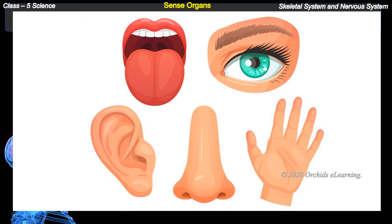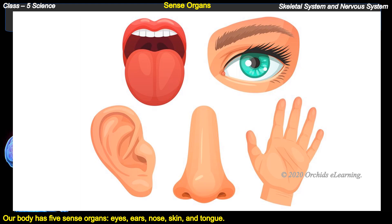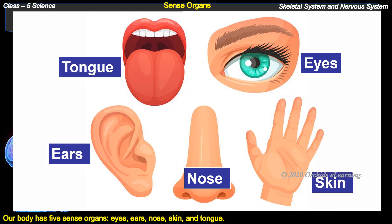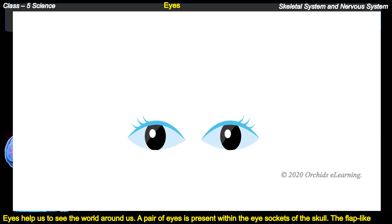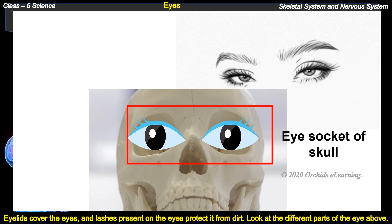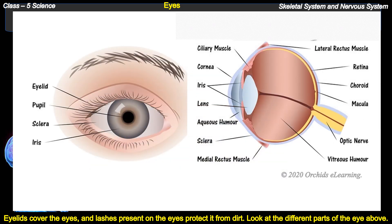Our body has five sense organs: eyes, ears, nose, skin, and tongue. Eyes help us to see the world around us. A pair of eyes is present within the eye sockets of the skull. The flap-like eyelids cover the eyes, and lashes protect them from dirt.